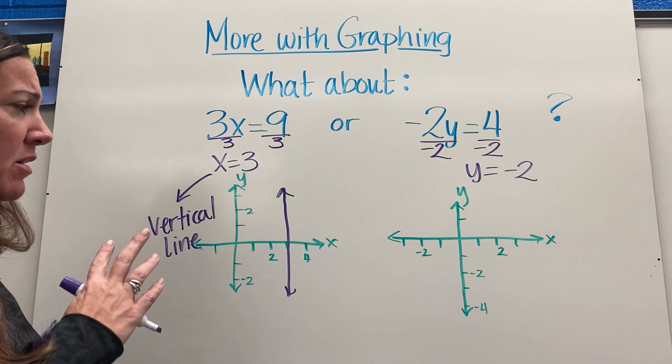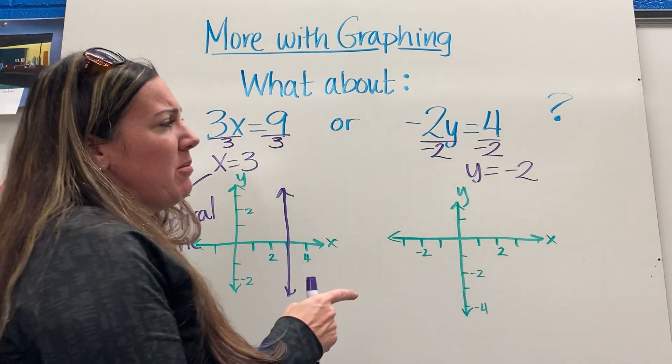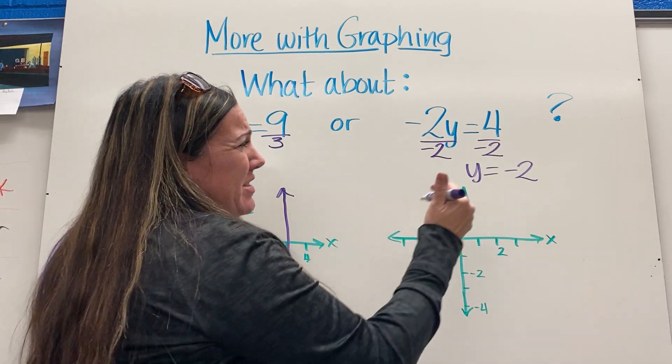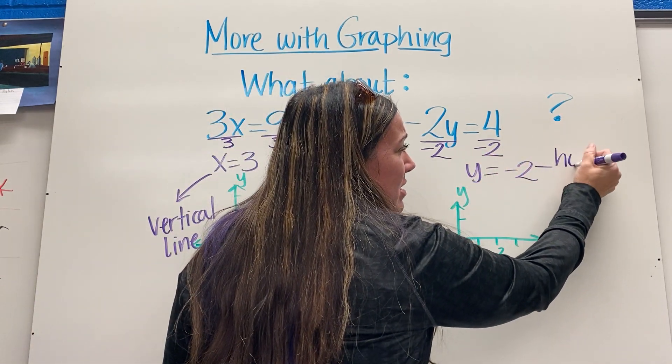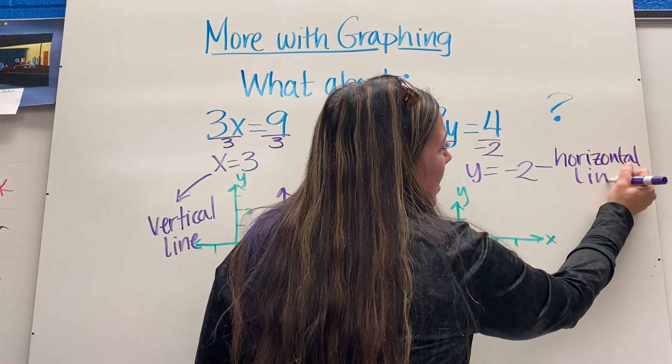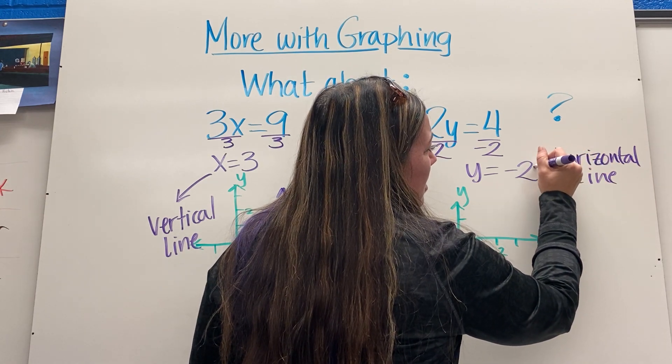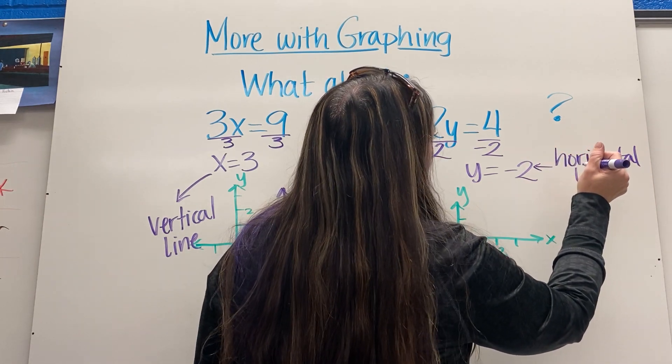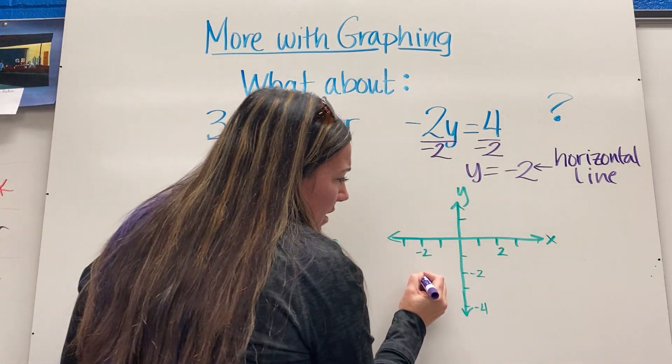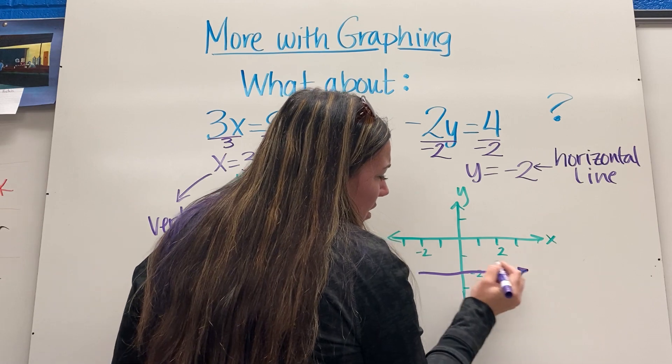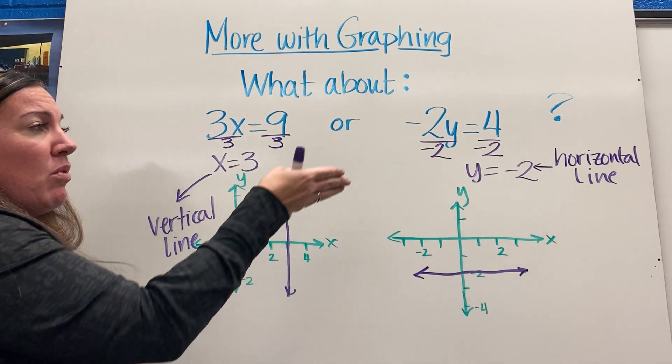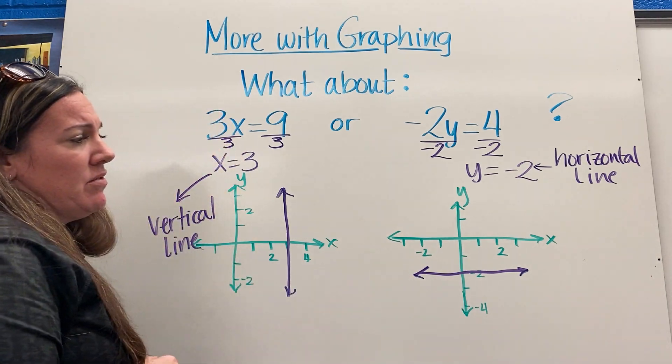I know it's a little bit strange. If we come over here, y is always negative 2, so this actually ends up being a horizontal line. I'm not sure that I spelled horizontal right. Anyway, so I'll draw a horizontal line at negative 2.